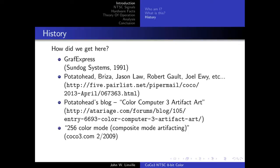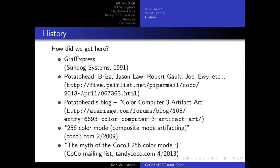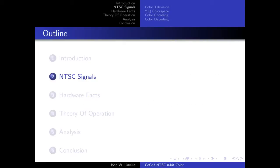On coco3.com there are postings from around February 2009 titled '256 Color Mode Composite Mode Artifacting.' This is when I became aware of the mode. I discussed it particularly with Jason Law, who sent me palette files I used for video conversions. There was a brouhaha that came about — Jason seems to be trying to move past it and I'm ready to move past it too. There's also 'The Myth of the Color CoCo 3 256 Color Mode' posted to the CoCo mailing list and tandycoco.com, dating from April 2013.